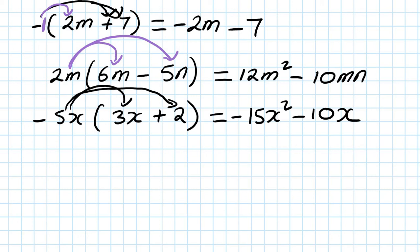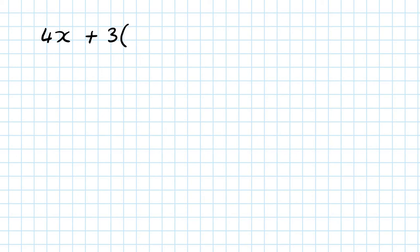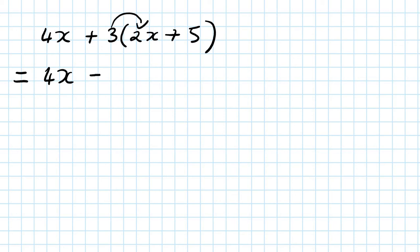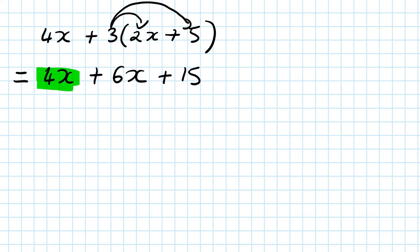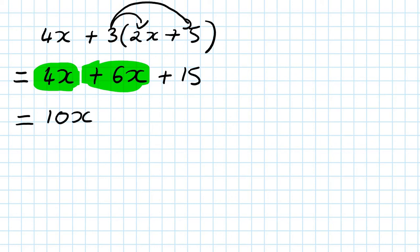Now let's move on to expand and simplify. Let's say 4x plus 3, open bracket, 2x plus 5. Step one: remove the bracket first. So the 4x I just write down, then 3 times 2x is 6x, and 3 times 5 is 15. Now collect like terms: 4x plus 6x is 10x, and the 15 stays as is. So the answer is 10x plus 15.